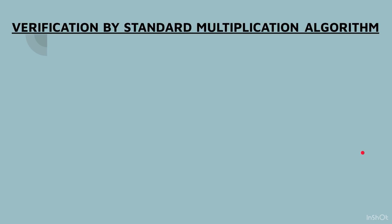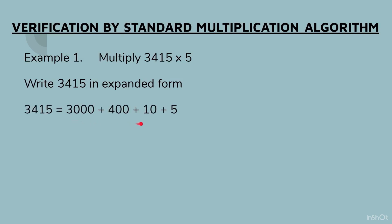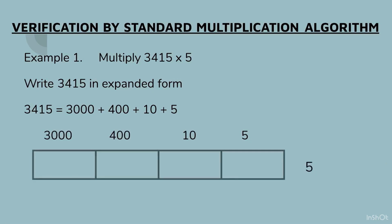Verification by standard multiplication algorithm. Our question was 3415 × 5. We will first write 3415 in expanded form: 3000 + 400 + 10 + 5. This is the basic concept we learned in Lesson 1. We will spread it out and write it on top of a table, and on the right side we will write 5.